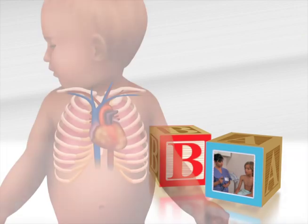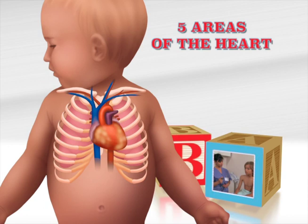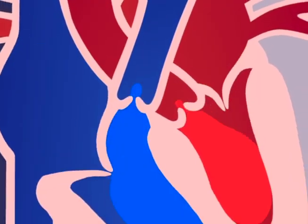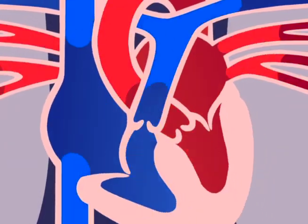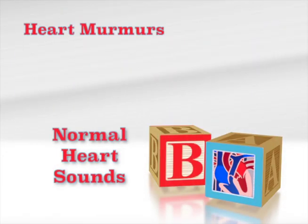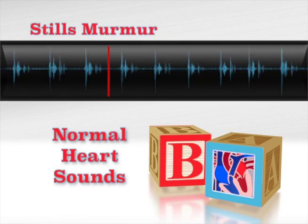The nurse should listen to the character of heart sounds using the bell of the stethoscope, placing it over five areas of the heart: the aortic area, the pulmonic area, the tricuspid area, the mitral area, and Erb's point to detect any abnormalities. S1 is a normal heart sound in children and can be heard at the apex of the left sternal border — it is the lub of the lub-dub sound. S2 is also normal in children. Still's murmur, which is heard after S1, is common in pediatric patients and has a vibratory musical quality.